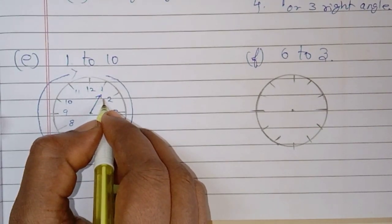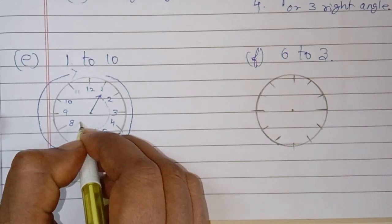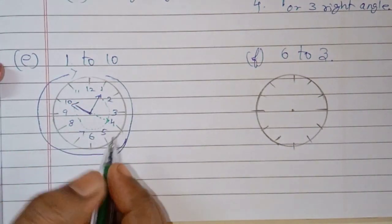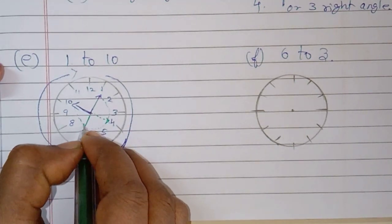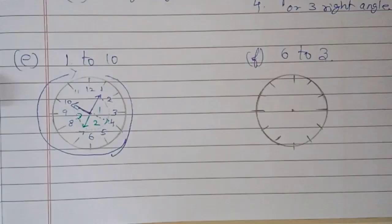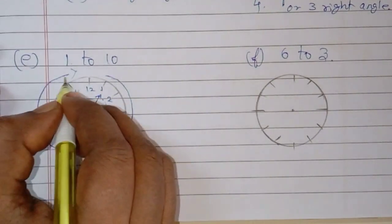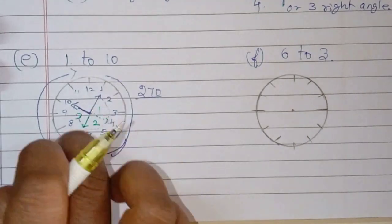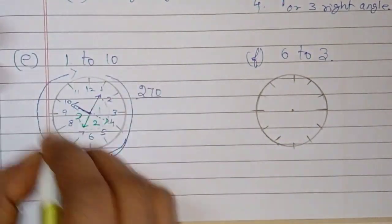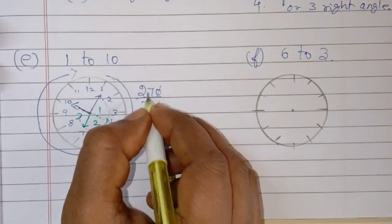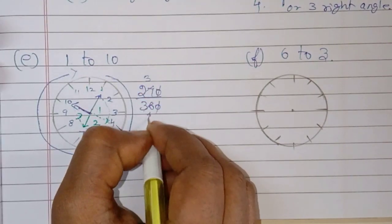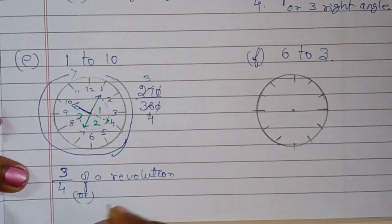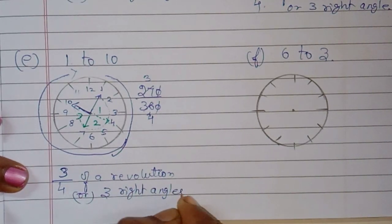With this angle, we can trace the move. This angle is a right angle — 1, 2, 3 right angles are formed. 3 right angles equals 270 degrees: 90 + 90 + 90. One revolution is 360 degrees. So 270 by 360 simplifies — 9 threes are 27, 9 fours are 36 — giving 3 by 4 of a revolution or 3 right angles as the answer.